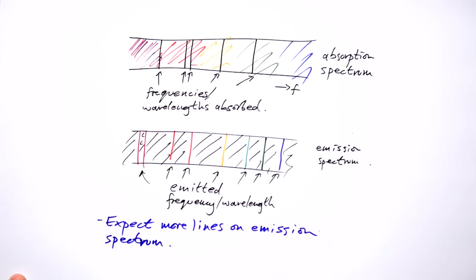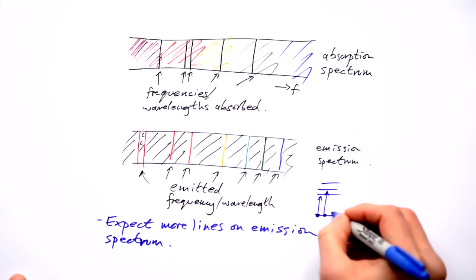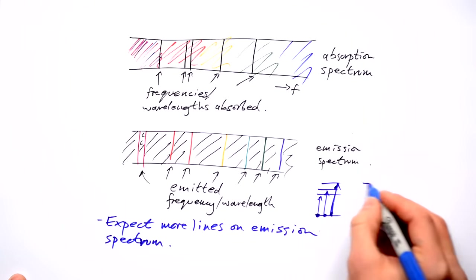Well, it's because all electrons, when they absorb, they have to start at the ground state and go up to a specific energy level.